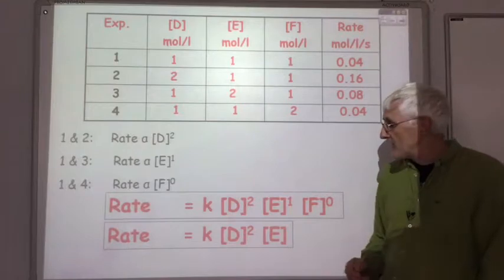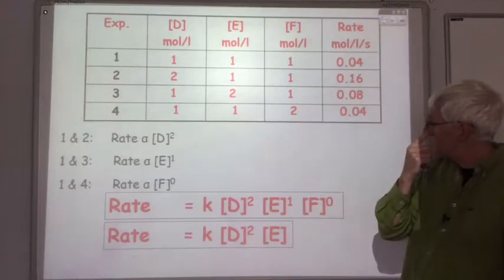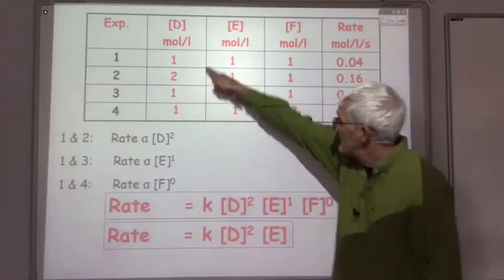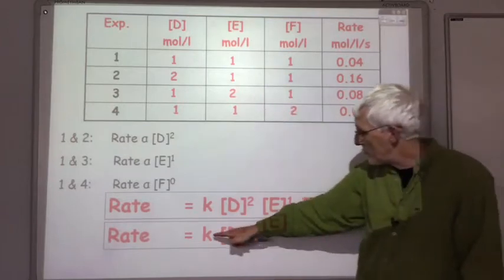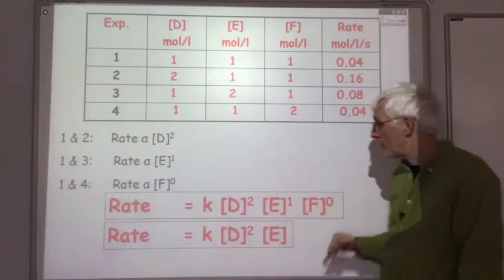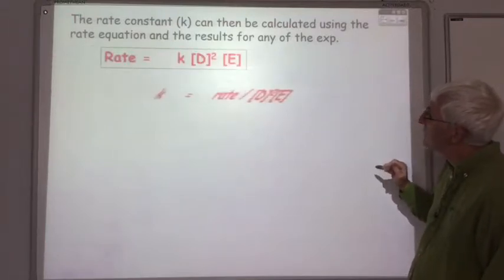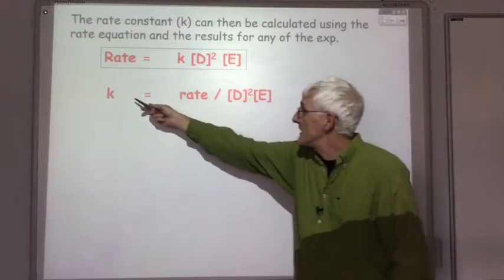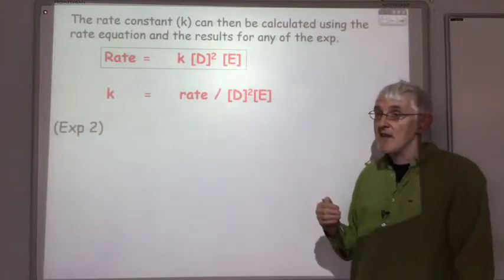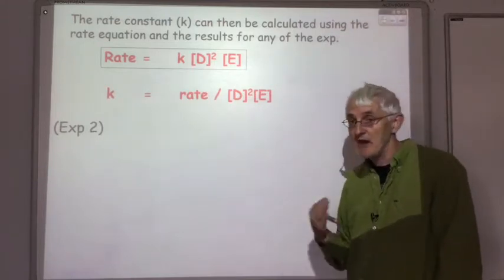The next thing you might be asked to do is work out the value of K. You can do this using any of the four experiments — you know the rate, the value of D, and the value of E, so the only unknown is K. Rearranging the equation: K equals rate divided by D squared times E. Feeding in the values for experiment 2, the rate was 0.16, the concentration of D was 2, the concentration of E was 1. So that comes to 0.16 divided by 4, which is 0.04.